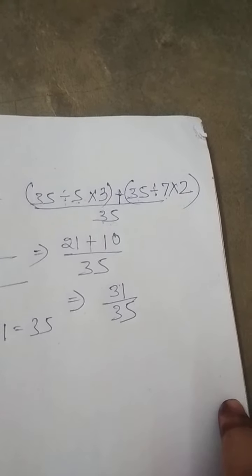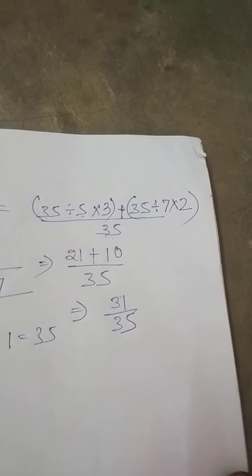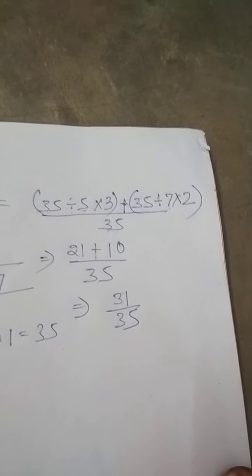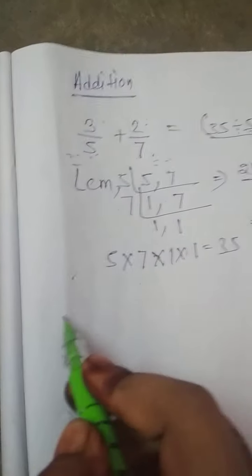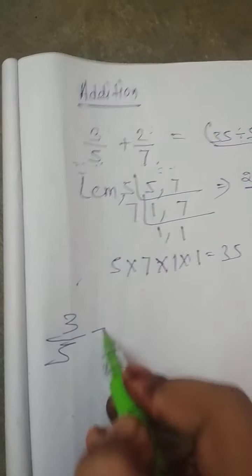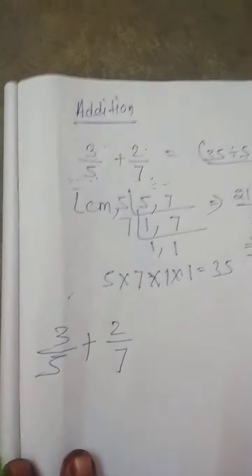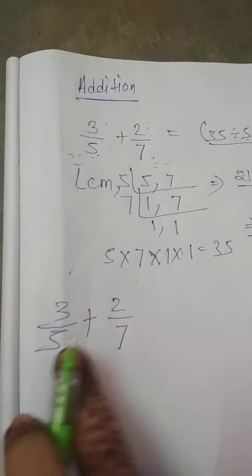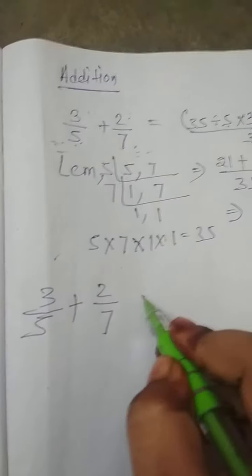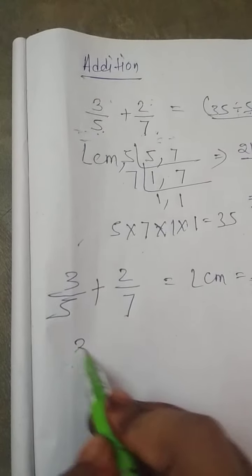Understood all? This is one process of addition. One more process we will discuss. Look at here: 3 by 5 plus 2 by 7 is given. First take LCM — LCM equals 35, we know.